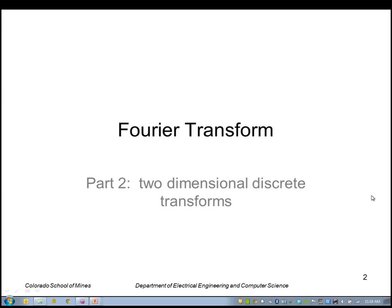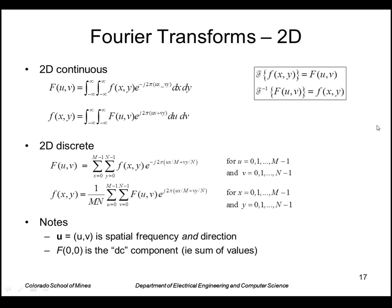This lecture is about the Fourier transform, concentrating on two-dimensional discrete transforms. Let's look at two dimensions now. Fourier transforms in two dimensions: the continuous version basically we just integrate over x and y instead of just x. In the discrete version, we use the summation instead of the integrals, so here now we have two frequency components u and v.